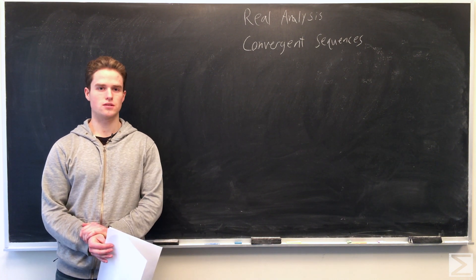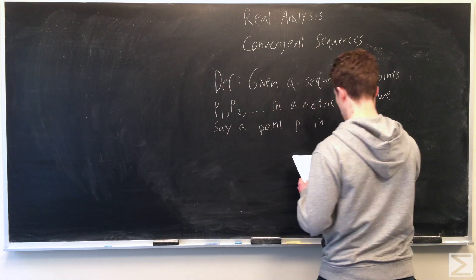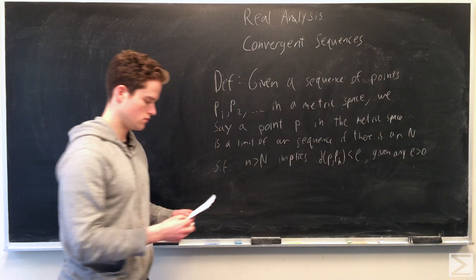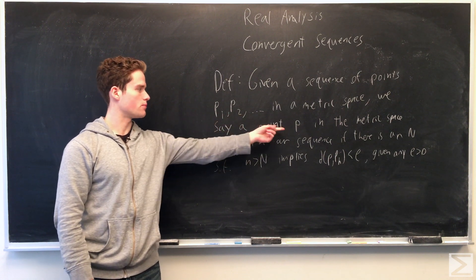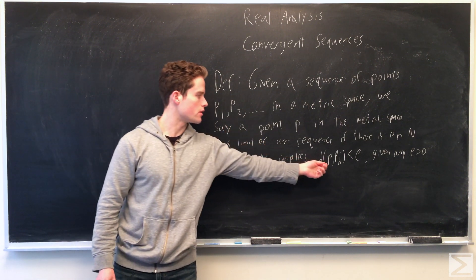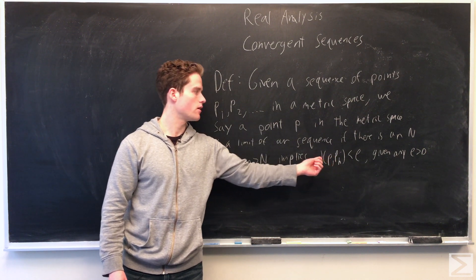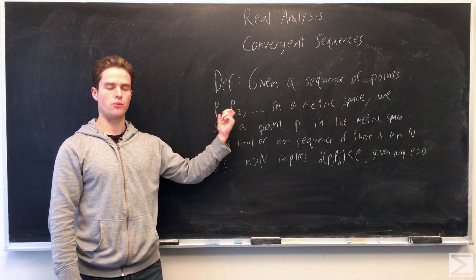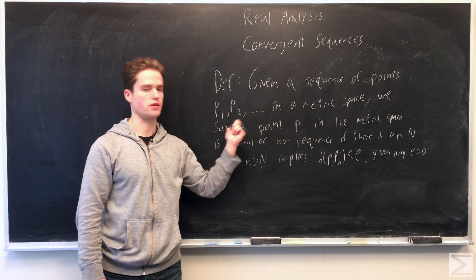Today we're going to talk a little bit about convergent sequences. In a metric space, given a sequence of points, we say these points have a limit or that they converge to a point P if we can find some positive integer N such that any little n greater than N implies the distance between P and P_n is less than ε, where ε can be chosen to be any positive real number as close to zero as we want. So this is really just saying these points in the metric space get as close as we want to P. In that case, P is the limit of the sequence and we say the sequence converges in the metric space.